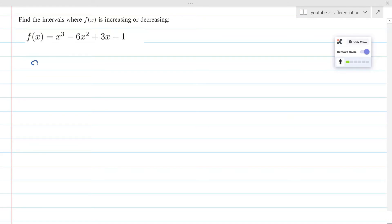So the first step here would be to differentiate the function. Let's find f'. f' would be 3x² - 12x + 3.